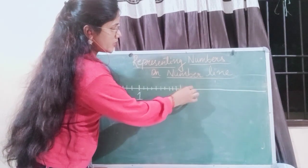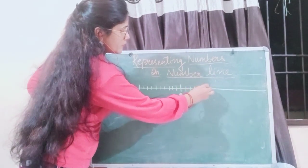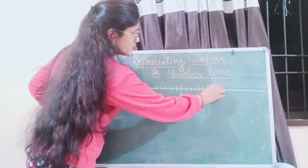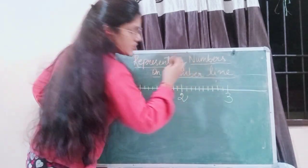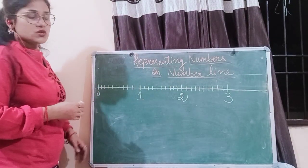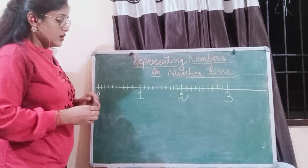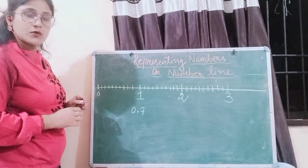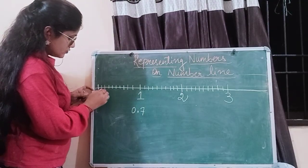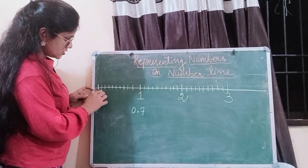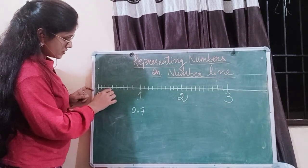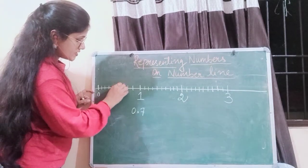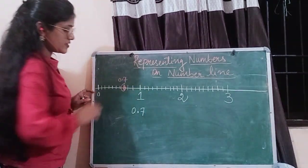So if I ask you to plot a number 0.7, where are you going to plot? You will count from here - this is 0, so 0.1, 0.2, 0.3, 0.4, 0.5, 0.6, so this point is 0.7.